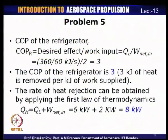In summary for problem five: the COP of the refrigerator is 3, meaning 6 kW of heat is removed from the food compartment per 2 kW of work input, and the heat rejection rate to the surroundings is Q_H = Q_L + W_net_in = 6 + 2 = 8 kW.